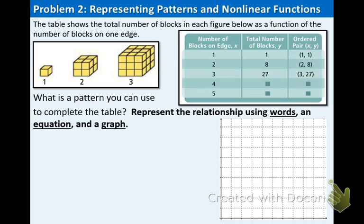Example 2. The table shows the total number of blocks in each figure as a function of the number of blocks on one edge. What is a pattern you can use to complete the table? Represent the relationship using words, an equation, and a graph. Take a moment to look at the picture of the cubes and blocks and see if you see a pattern. The first step is to fill out the table — predict what the blanks will be. When there are four blocks on an edge, how many total blocks are there? And when there are five blocks on an edge, how many total blocks are there?